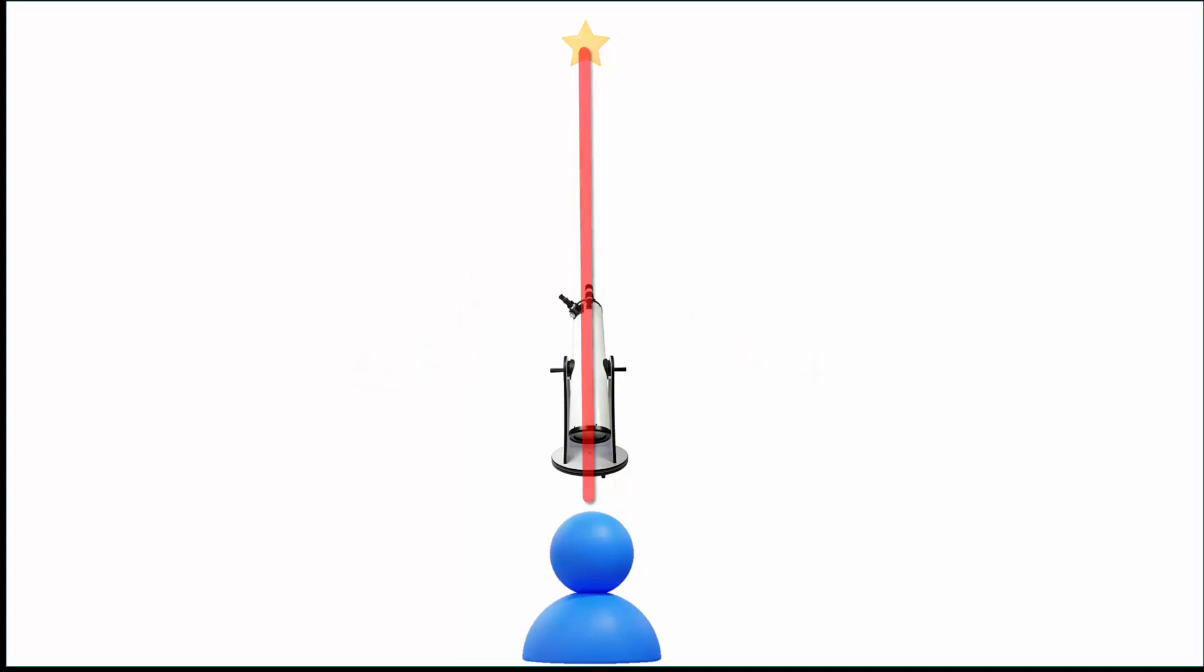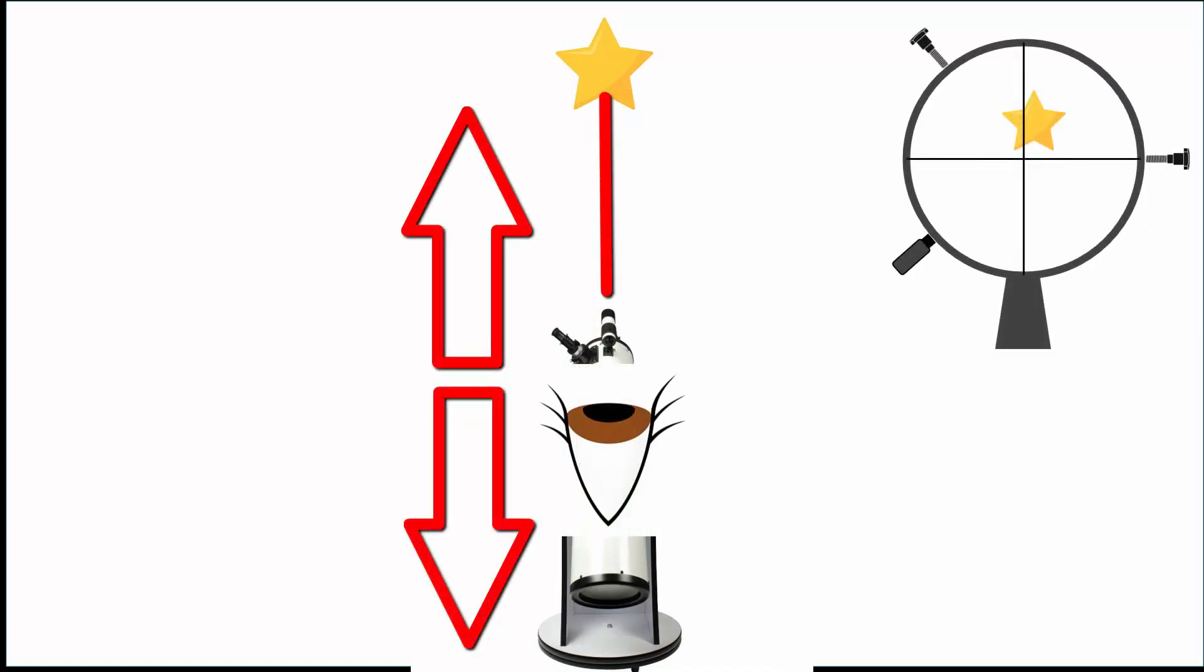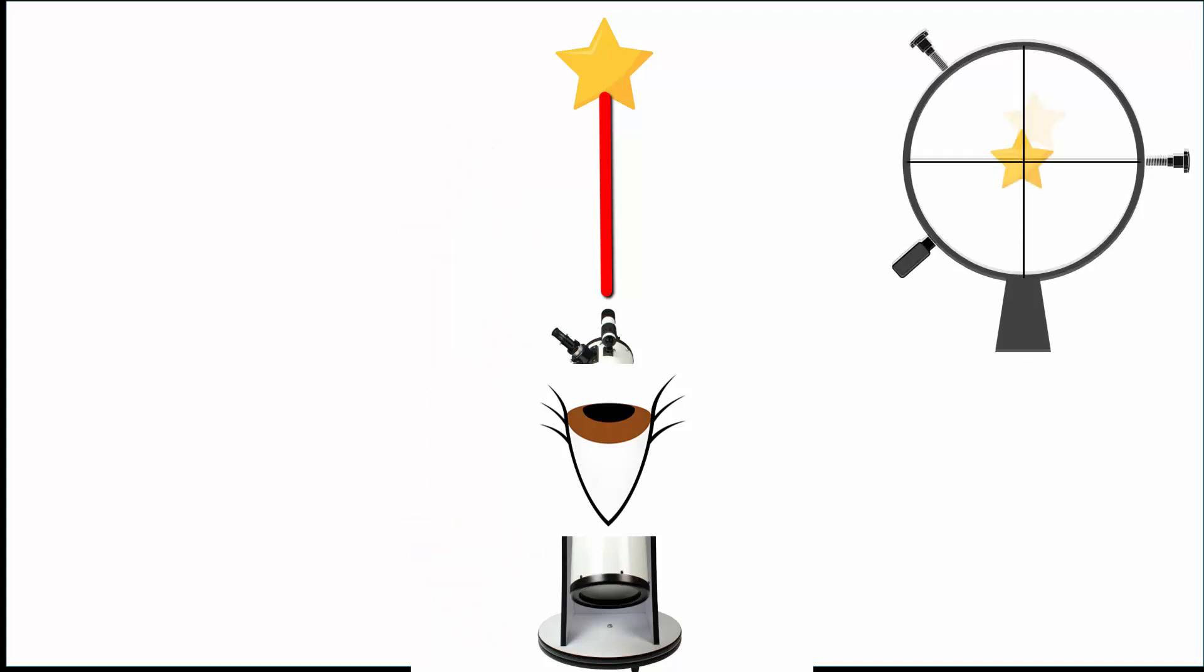Now you need to look through the finder scope and gently lift the telescope up or down to bring your bright target star into view. Then nudge the telescope to center the star under the finder scope crosshairs.